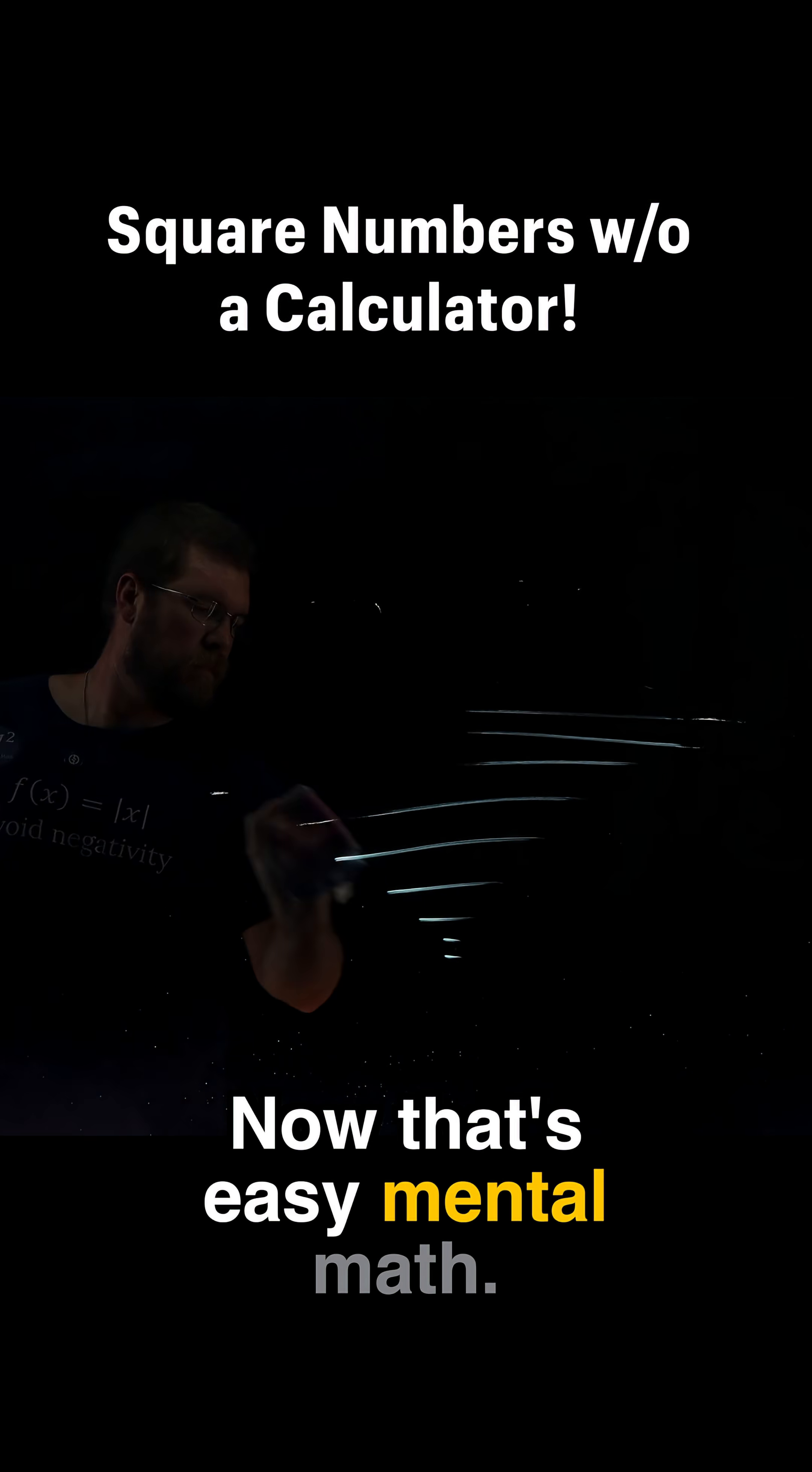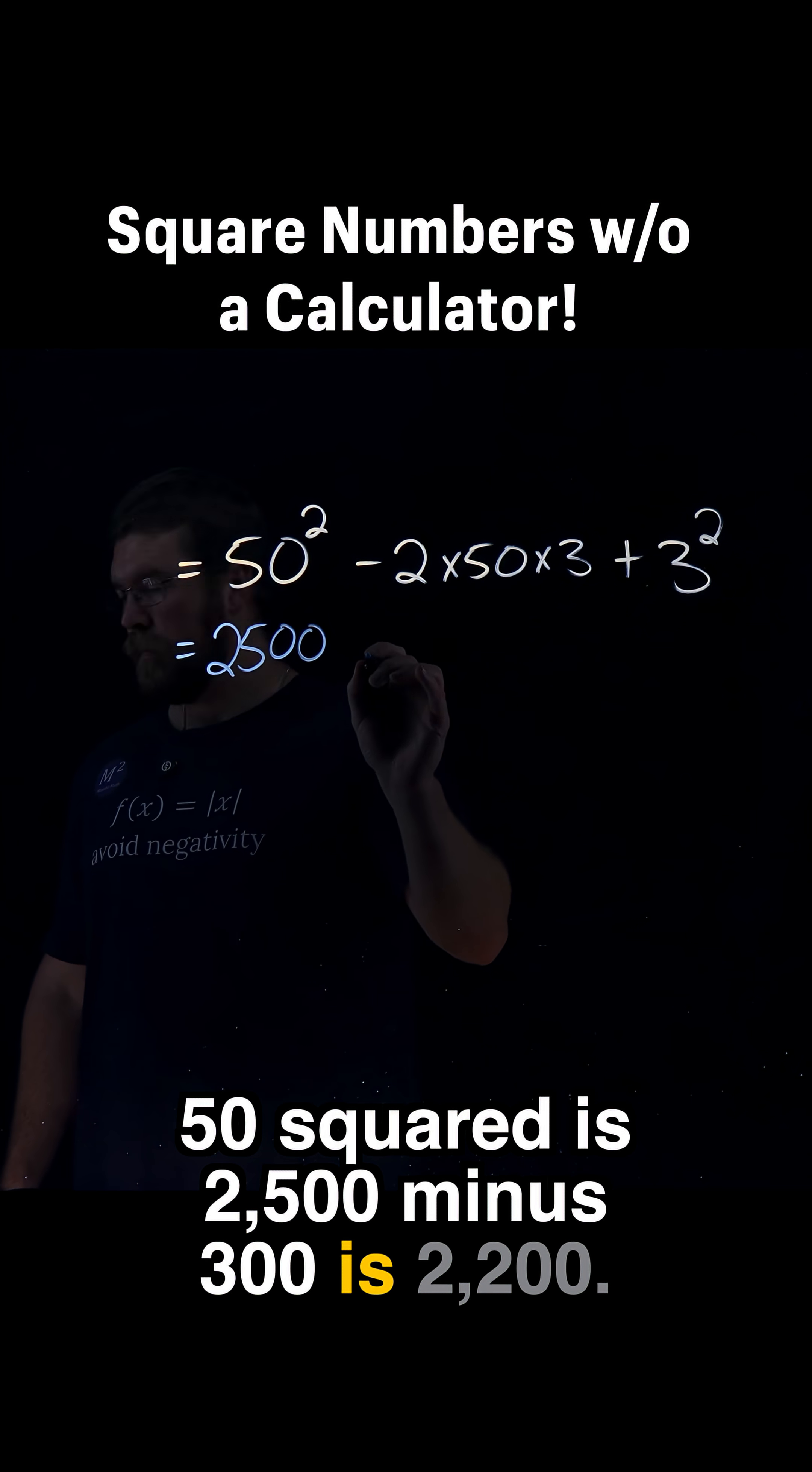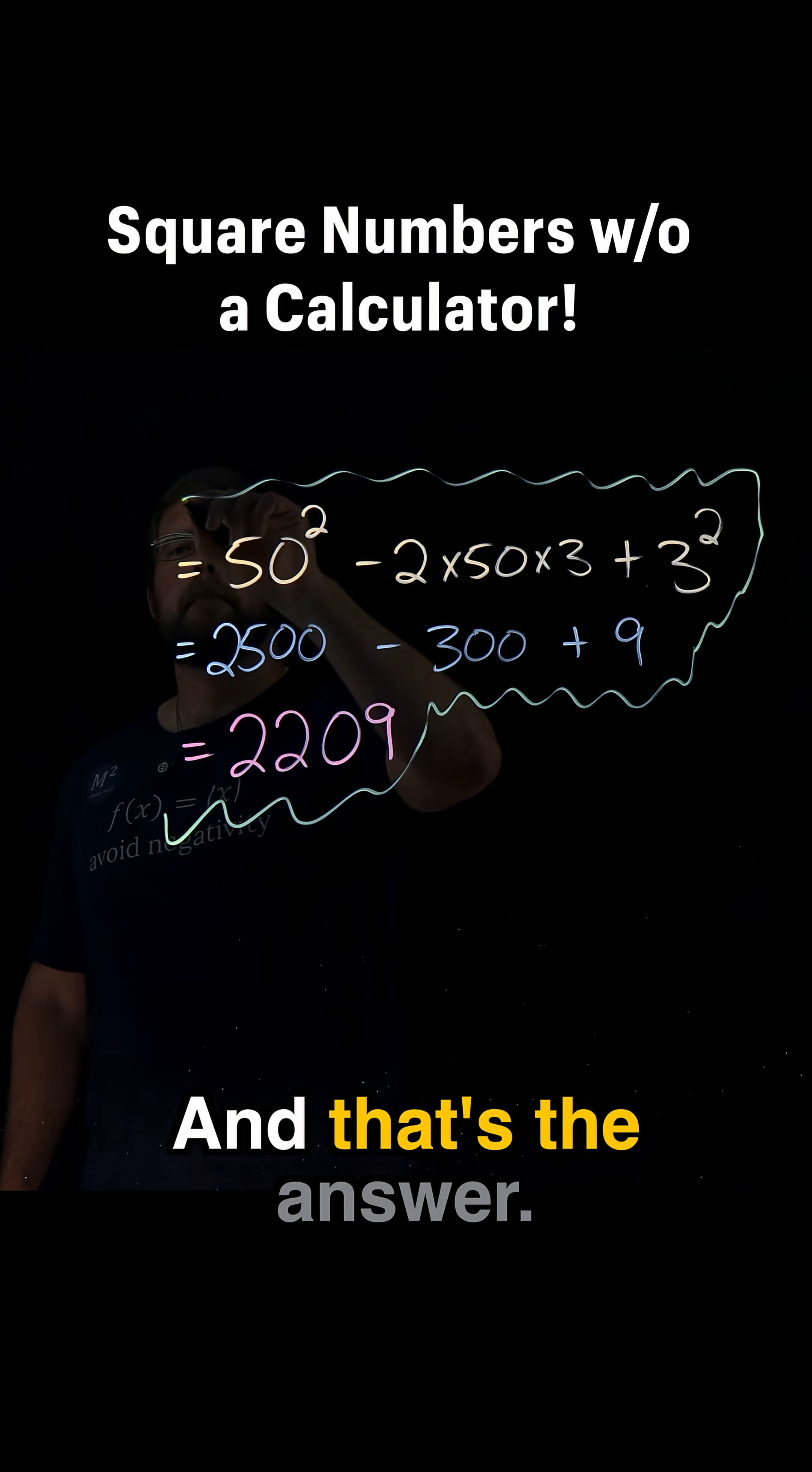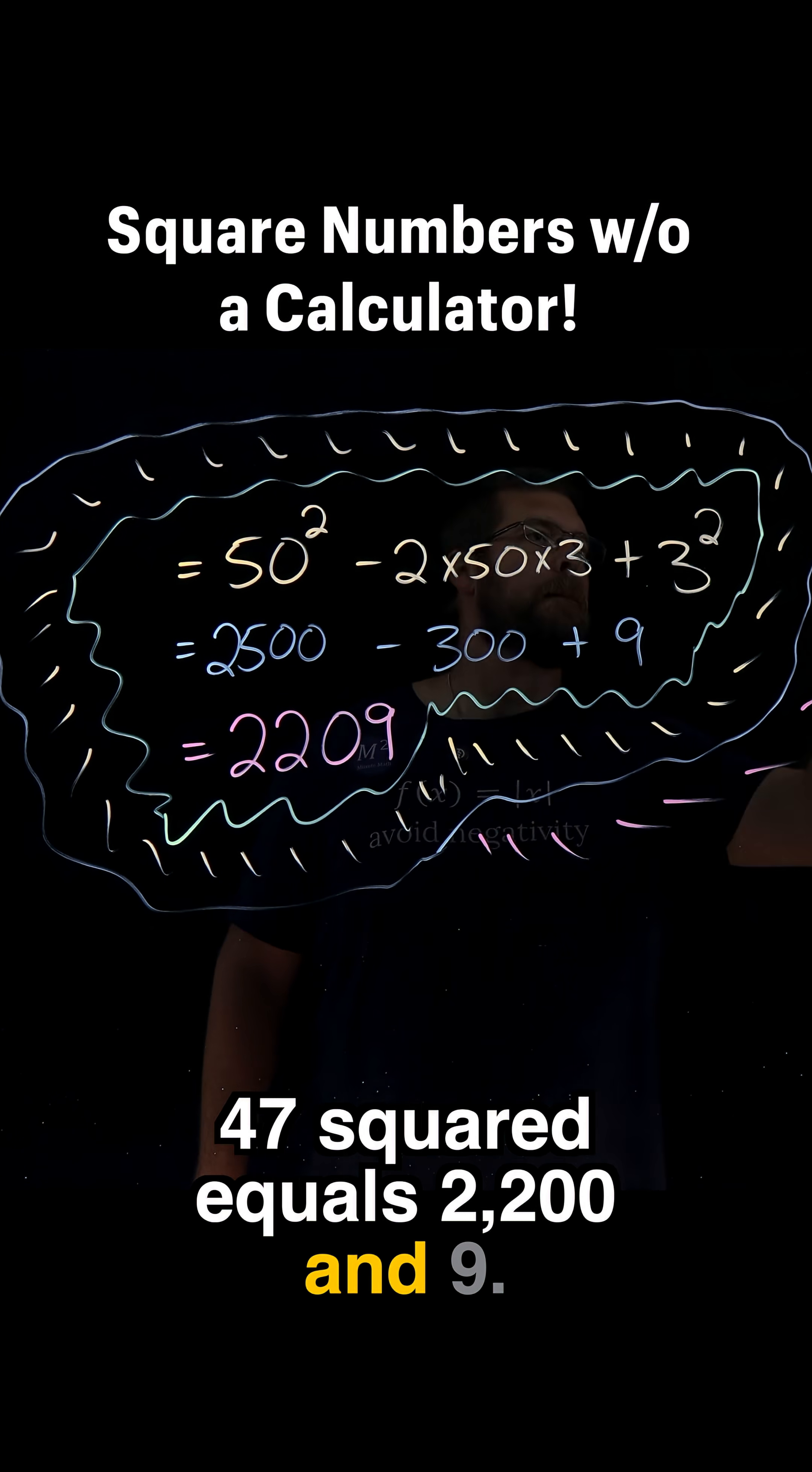Now that's easy mental math. 50 squared is 2,500 minus 300 is 2,200. Add 9 gives us 2,209. And that's the answer. 47 squared equals 2,209.